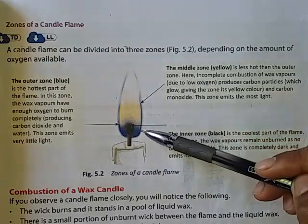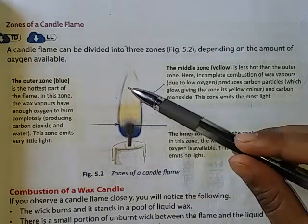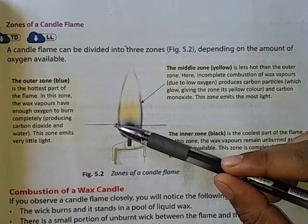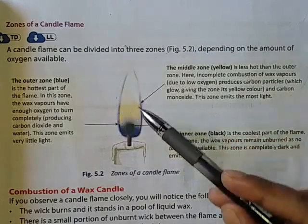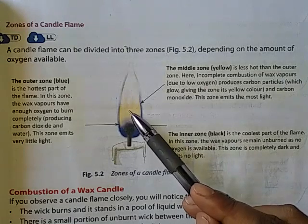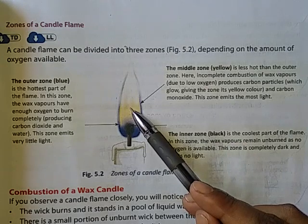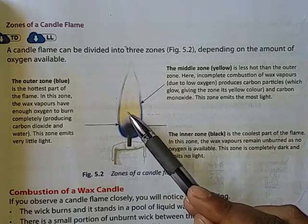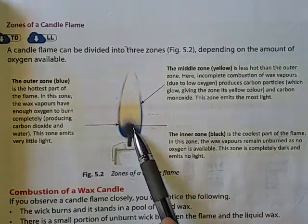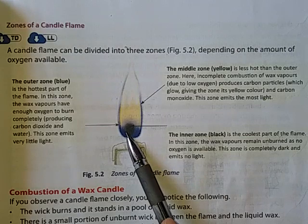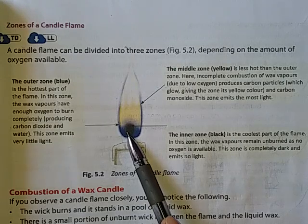To summarize: the outermost zone is blue in color and the hottest zone, where wax vapor has enough oxygen to burn completely, producing carbon dioxide and water, emitting very little light. The middle zone is yellow, the brightest zone, less hot than the outer zone, where incomplete combustion of wax vapor produces carbon particles giving it a yellowish glow, and carbon monoxide gas is also produced. The innermost zone is the coldest, where wax vapor remains unburned, no oxygen is available, and it is completely dark, emitting no light.